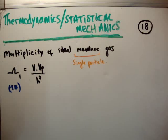We'll see that the multiplicity for one dimension is the volume in position space multiplied by the volume in momentum space, divided by h cubed.